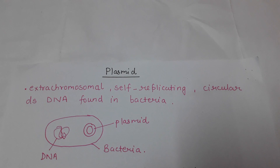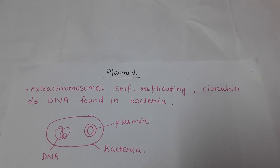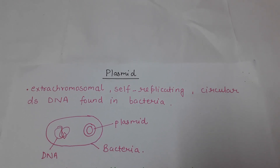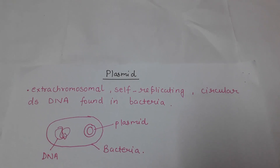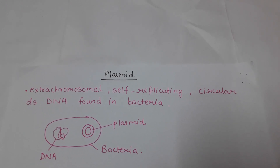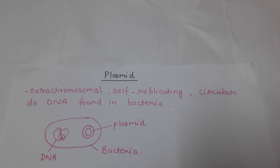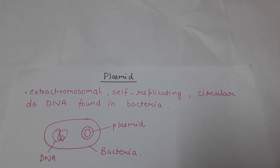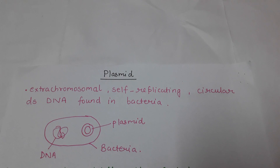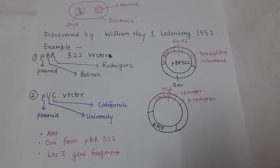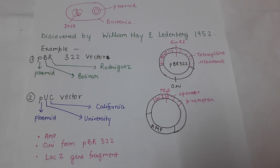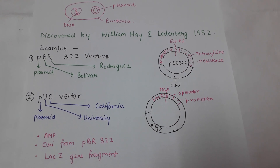The third tool is the plasmid. Plasmids are extra-chromosomal, self-replicating, circular double-stranded DNA found in bacteria, separate from the main genome. Plasmids were discovered by William Hayes and Lederberg in 1952.